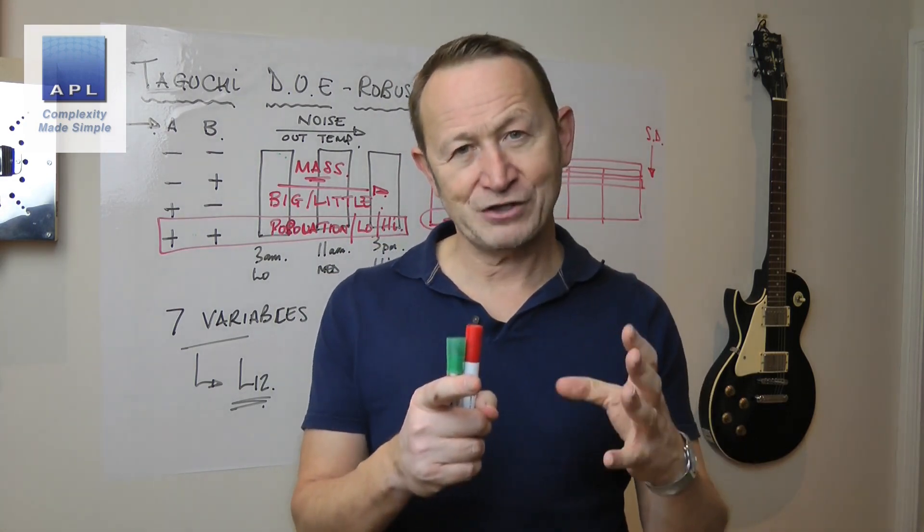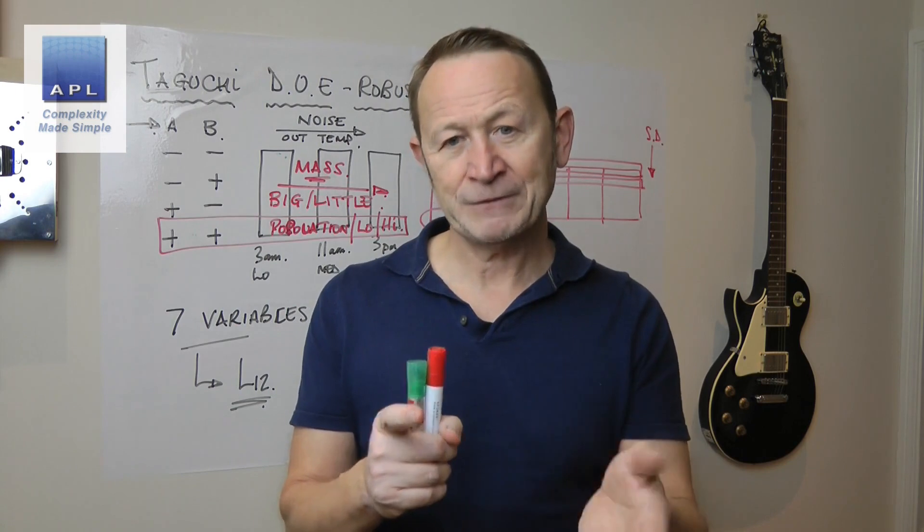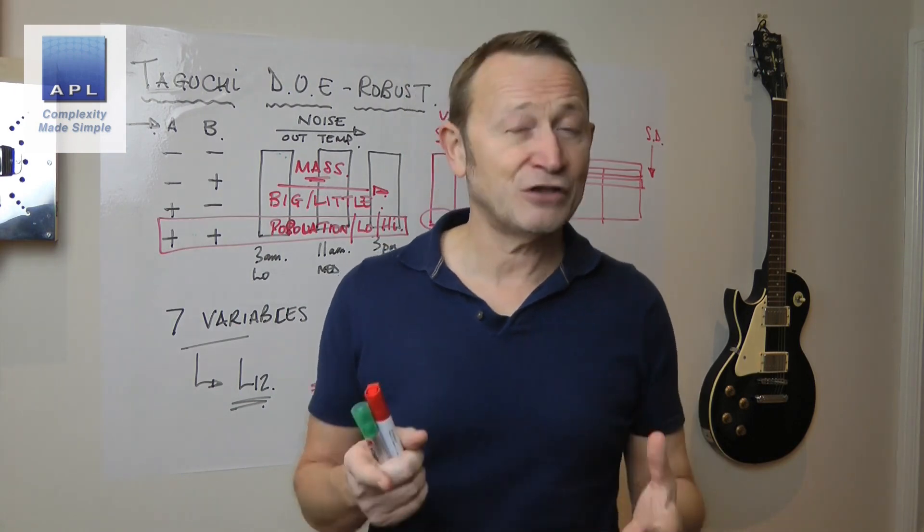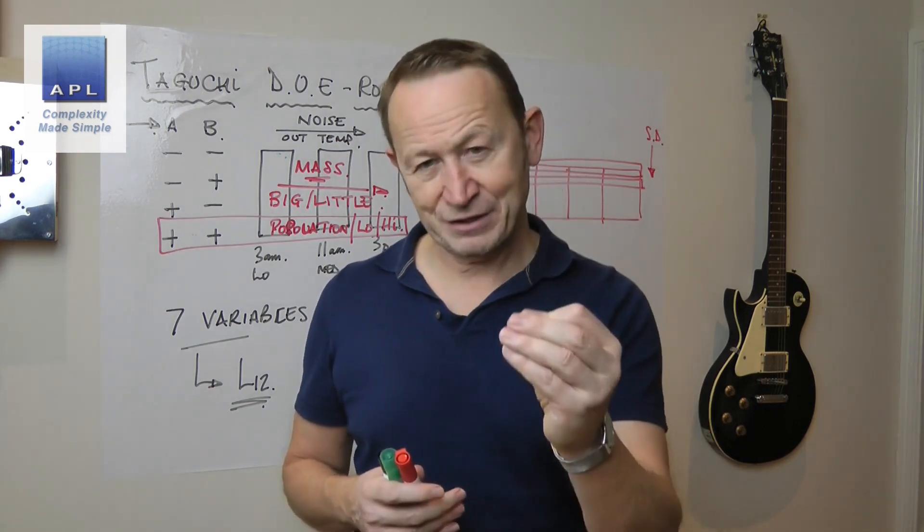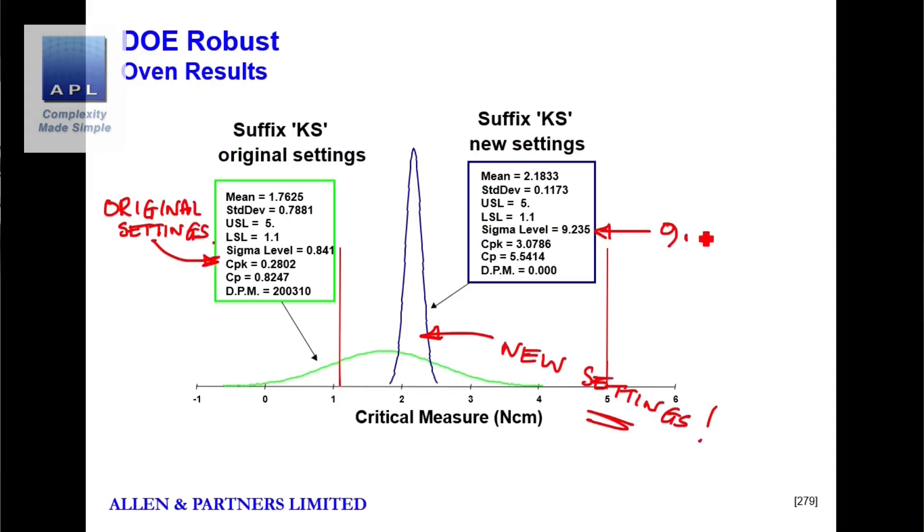Now, look, the process is slightly off centre. We're at nine sigma. Some of those settings have cost us money. So maybe we could ease down on the dot size. That capability, of course, would drift further towards the left-hand tolerance. But at nine sigma, there is no danger of any defect rates here. So, you know, this robust DOE was fantastic. Lots of the settings were cheaper.